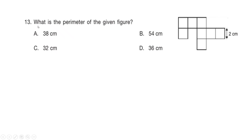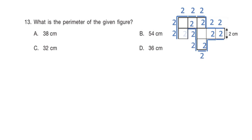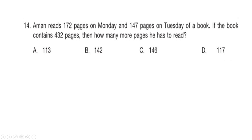Perimeter is the length of the boundary that encloses the figure. This figure is made out of boxes where each side is 2 cm. Counting the boundary sides: there are 18 sides along the perimeter. So the perimeter is 18×2=36 cm. Hence the perimeter is 36 centimeters.